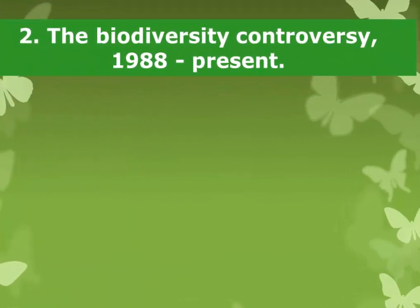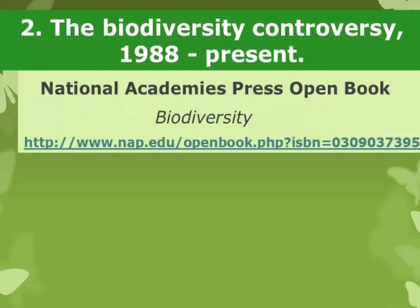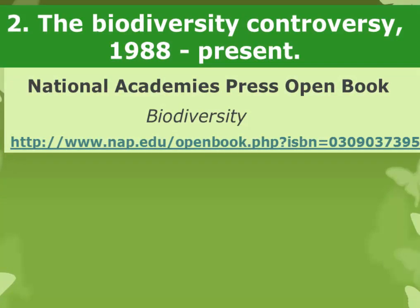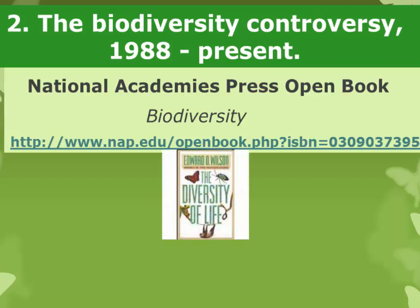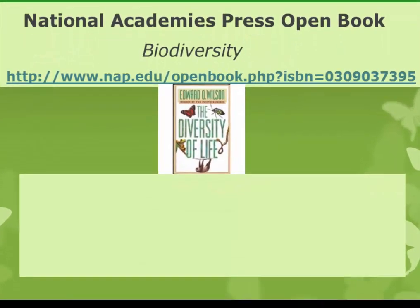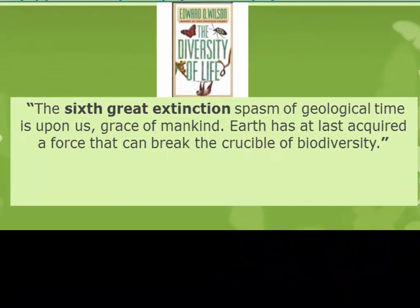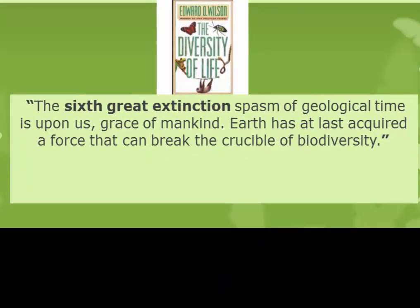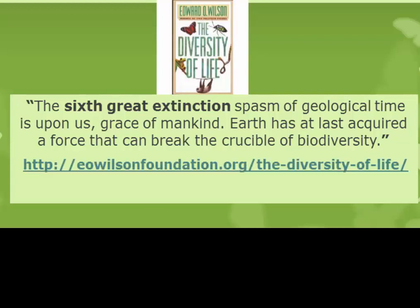Now let's look at the biodiversity controversy, which broke out with another book. Wilson wrote the introduction to a book called Biodiversity, which you can get for free from the National Academies of Science Press as a downloadable PDF. He also authored another book on the biodiversity crisis called The Diversity of Life. In 1988, Wilson wrote that the sixth great extinction is upon us, grace of mankind, and that the earth has at last acquired a force that can break the crucible of biodiversity — that force being industrial civilization.